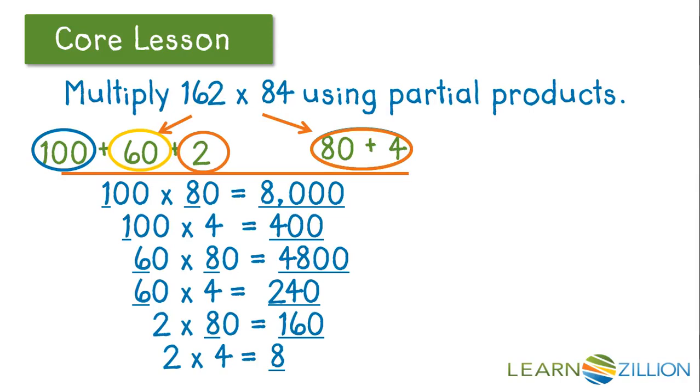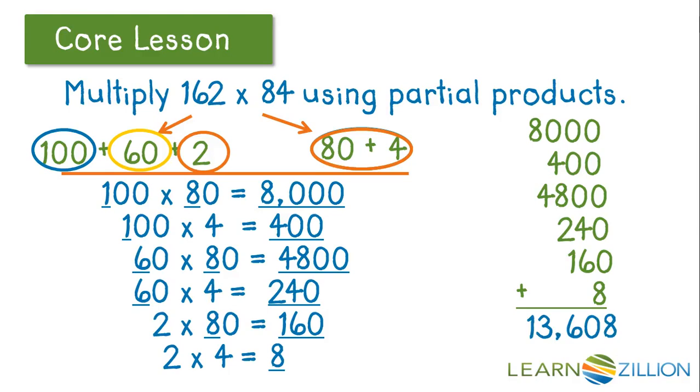We need to add our partial products together to get our final product. 8,000 plus 400 plus 4,800 plus 240 plus 160 plus 8 equals 13,608. 162 times 84 equals 13,608.